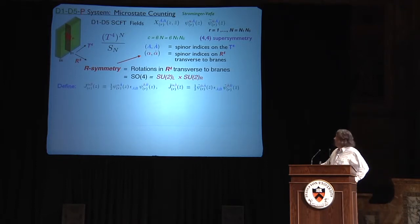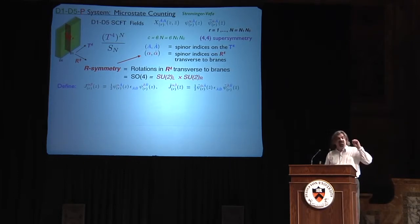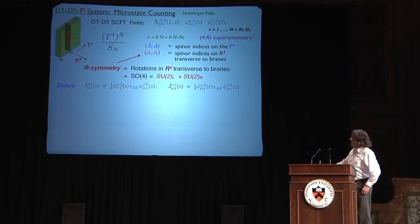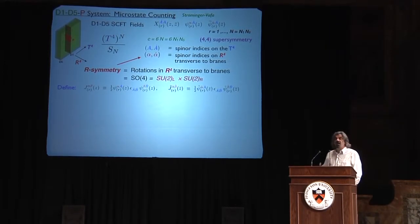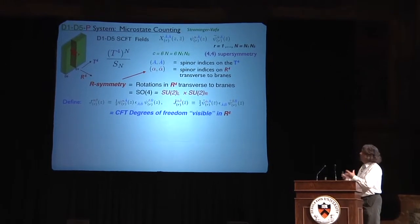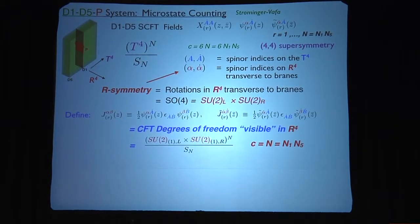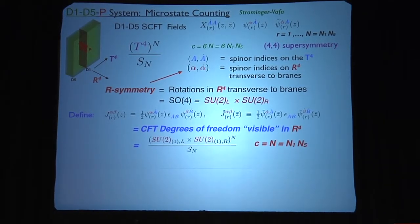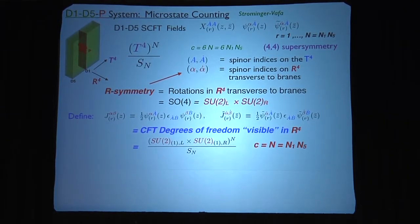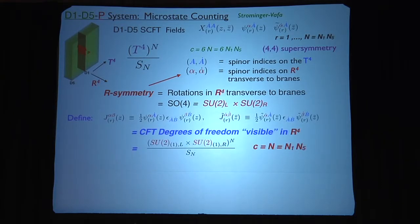Now, by forming Fermi bilinears, N of them, because this index runs from 1 to N, you can make precisely those degrees of freedom that stick into the space-time. These currents, these SU(2) currents, turn out to be things that are orthogonal to all the degrees of freedom in the torus. They are, therefore, exactly the degrees of freedom that are entirely visible in the space-time. Okay. And if you want to know what the field theory is, it's a level 1 current algebra, raised to the power N, divided by S_N, and it has a central charge one-sixth of the amount that you want. Because the amount that you want is 6N_1N_5, but you're at least going to get from the space-time one-sixth of that.